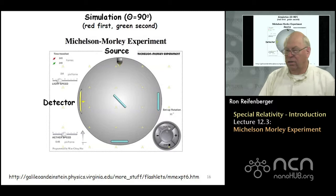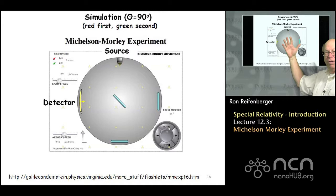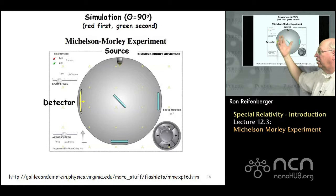There's a time difference between the theta equals zero and theta equals 90 degree orientations. If you run the simulation at 45 degrees, you'll find that the drift velocity affects both arms of the interferometer equally, so in that orientation there's no difference in the drift between the two beams.